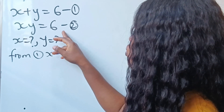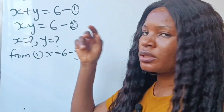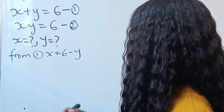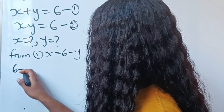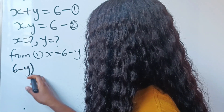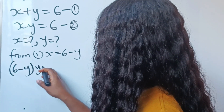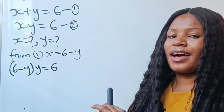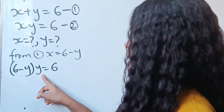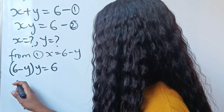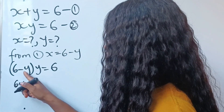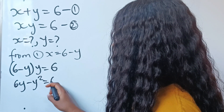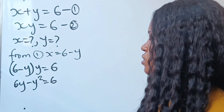Now let's substitute this into equation 2. If we do that, we are going to have 6 minus y, multiplied by y, is equal to 6. Now let's expand. 6 times y will give us 6y, minus y times y will give us minus y squared, is equal to 6.